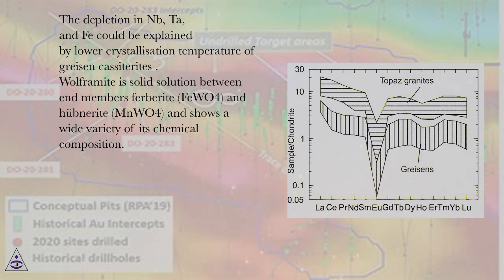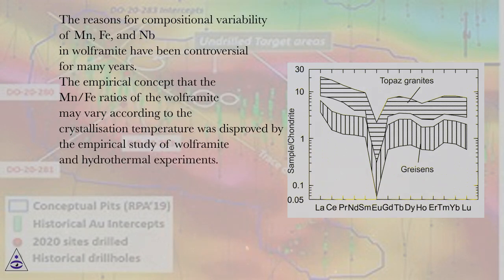Wolframite is solid solution between end-members ferberite, FeWO4, and hubnerite, MnWO4, and shows a wide variety of its chemical composition. The reasons for compositional variability of Mn, Fe, and Nb in wolframite have been controversial for many years.